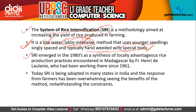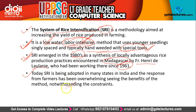SRI emerged in the 1980s as a synthesis of locally advantageous rice production practices encountered in Madagascar — which is in Africa. The SRI method was first developed by Father Henry de Lolani, who had been working there since 1961. Today, SRI is being adopted in many states in India and the response from farmers has been overwhelming, seeing the benefits of the method.